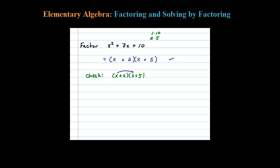So x times x is x squared, x times 5 is plus 5x, 2 times x is plus 2x, and 2 times 5 is plus 10. So that equals x squared plus 7x plus 10. Notice that's the original question.